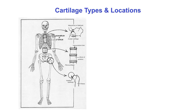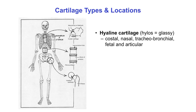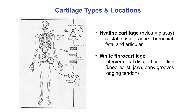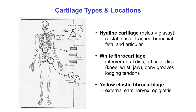There are three main types of cartilage. Hyaline or glassy cartilage is found in the costal, nasal, tracheobronchial, fetal, and articular cartilage. White fibrocartilage is the cartilage in intervertebral and articular discs as well as in the bony grooves where some tendons run. Finally, yellow elastic fibrocartilage is found in the ears, larynx, and epiglottis.